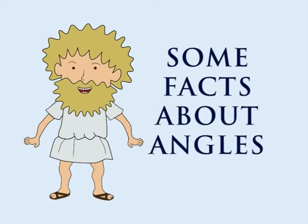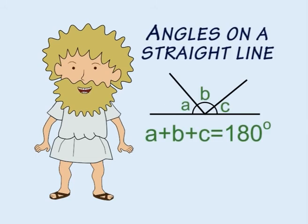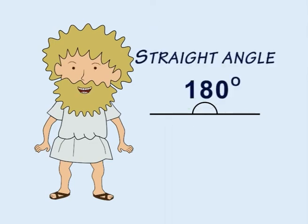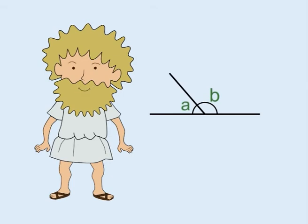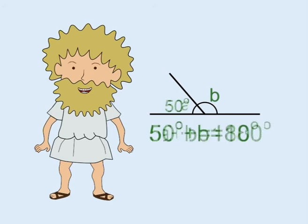Here are some interesting facts about angles. Angles on a straight line always add up to 180 degrees, because together they make a straight angle. Here, the straight angle has been split into two. If you know one angle, you can always work out the other one, because A plus B equals 180 degrees.